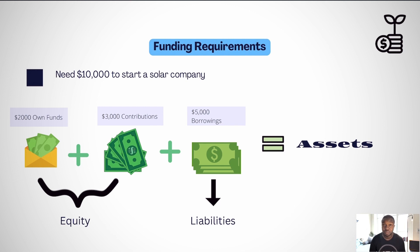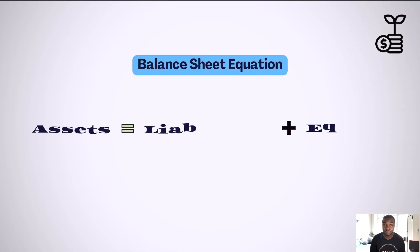If he also buys raw materials worth $3,000, then his assets are $5,000 in cash, $2,000 in machinery, and $3,000 in raw materials. Therefore, assets are equal to liabilities plus equity, and this is the basis for the balance sheet equation.